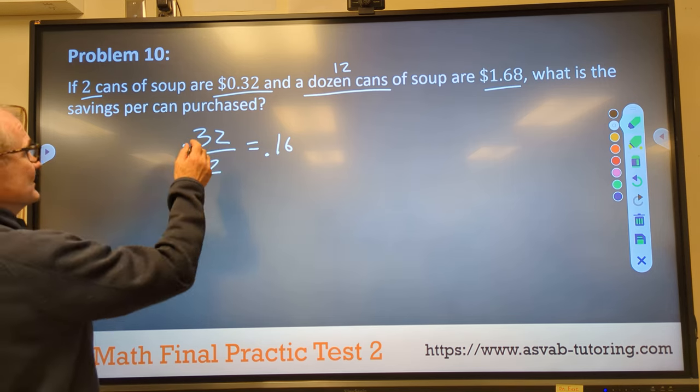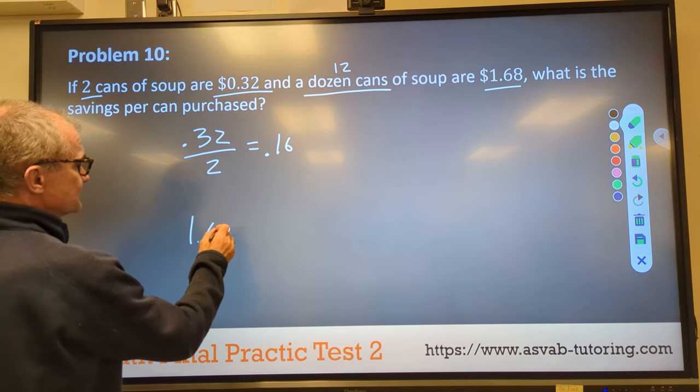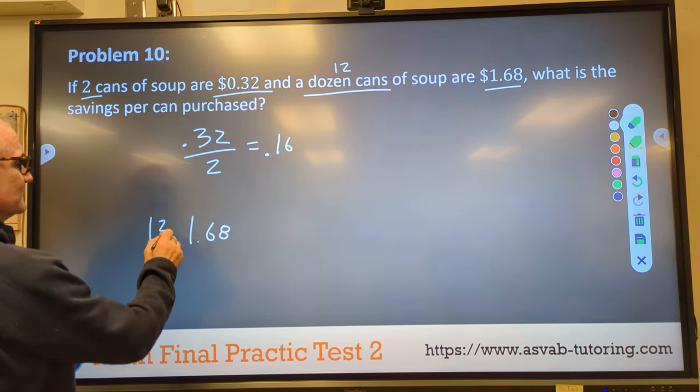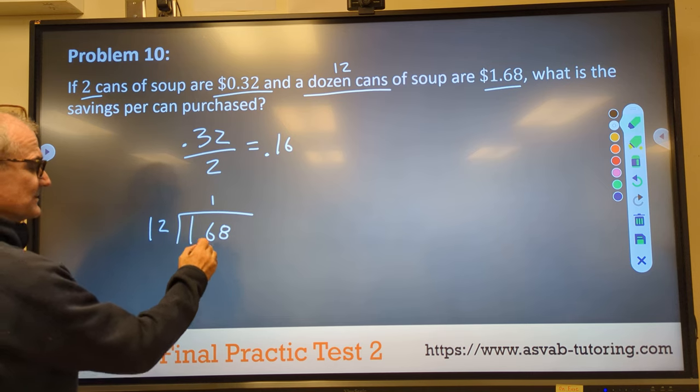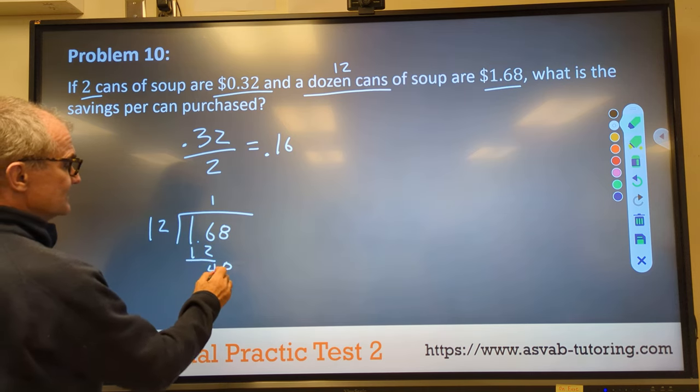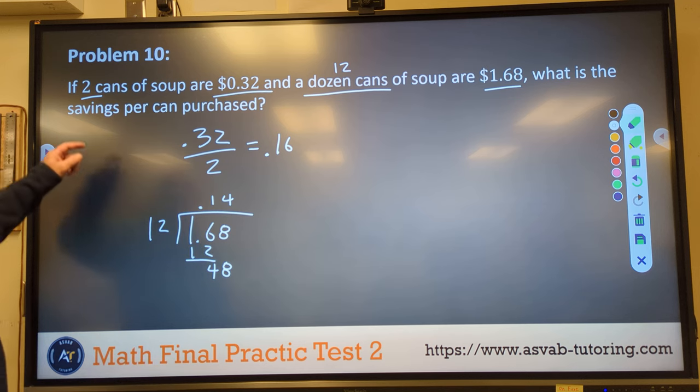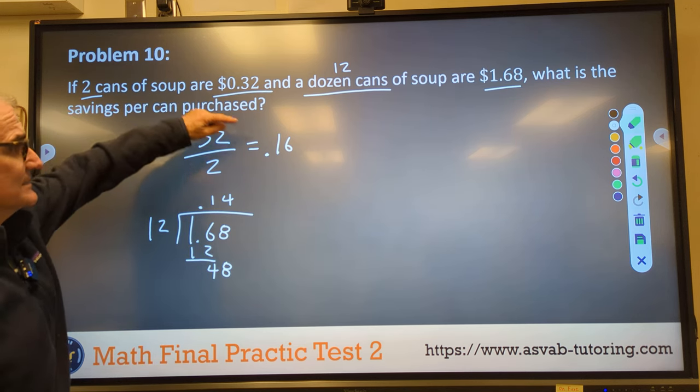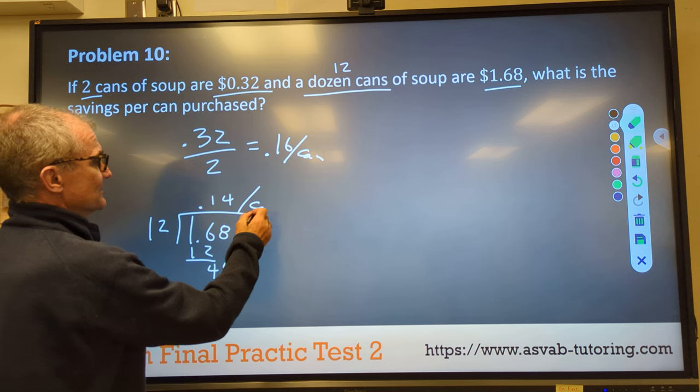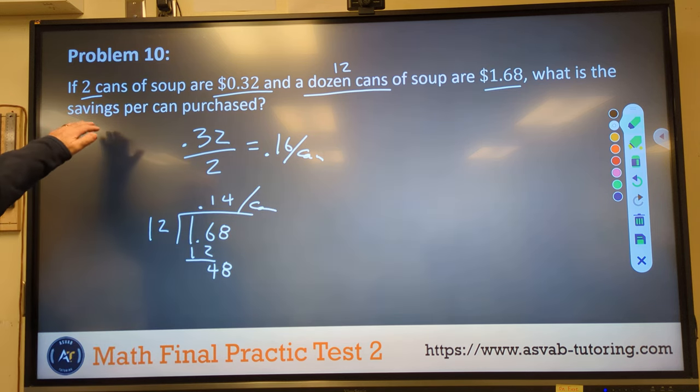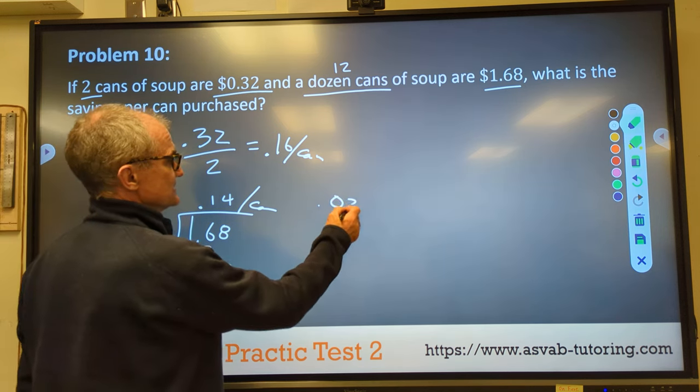What is the savings per can purchased? So I've got to figure out the difference between this scenario and that scenario. So I'm going to do a price per can. So I'm going to take $1.68 divide that by 12. 12 goes into 16 one time. 6 minus 2 is 4. Bring down the 8. 12 goes into 48 four times. Decimal place goes straight up here. First case scenario, two cans for 32 cents. 16 cents per can or 14 cents per can. In the second scenario, what is the savings per can? So the difference between 16 and 14 is 2 cents per can.